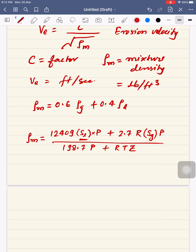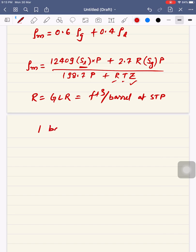The compressibility factor Z, operating temperature T, and R as the gas-liquid ratio (GLR) in cubic feet per barrel at STP are known factors. One barrel equals 159 liters or 42 US gallons. You can calculate the mixture density from these known values.